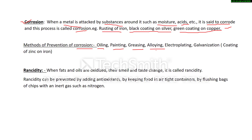One important term is galvanization — coating of zinc on iron is called galvanization. These are some methods of prevention of corrosion.